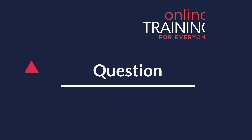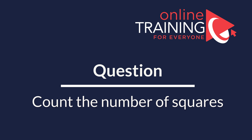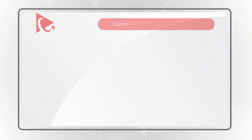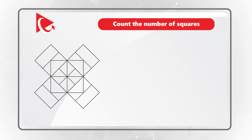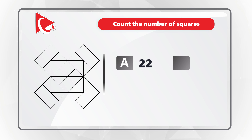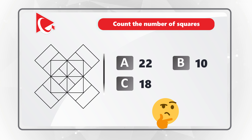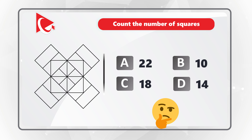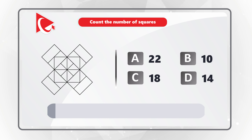Here is an interesting problem where you need to count the number of squares in the presented shape. The correct number is one of four different choices: Choice A, 22. Choice B, 10. Choice C, 18. And Choice D, 14. Take a close look at the picture to see if you can come up with the right solution.